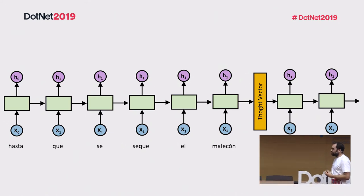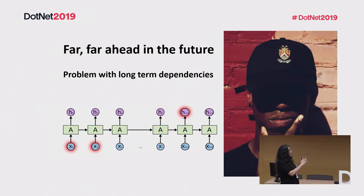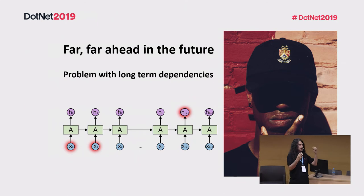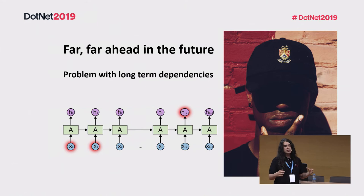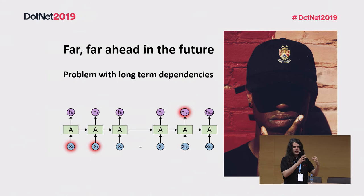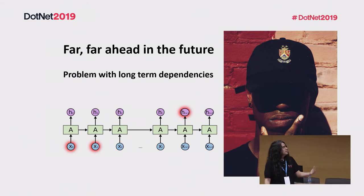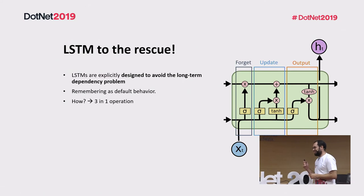There's a problem: if our sequence of words or characters is too large, the internal state passed from one neuron to the other will degrade. It's going to lose the ability to understand what's important and what's not — especially the context from the beginning of the section. That's a problem. But don't worry about it — I've got this covered with LSTMs.